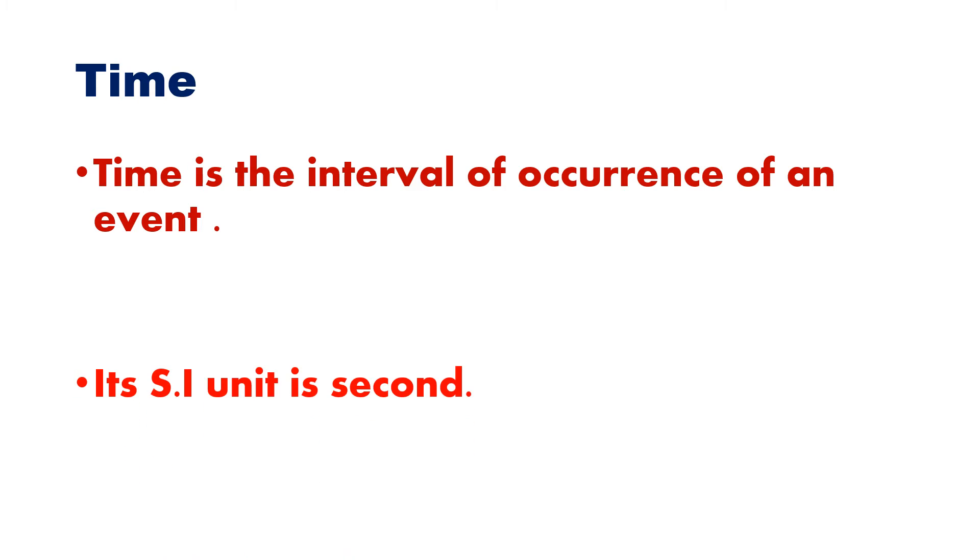Then next quantity is time. So what is time? Time is the interval of occurrence of an event. So when an event happens, there is a starting time and there is an ending time. So the time interval between these two events is called time. And what is the SI unit of time? It is second.